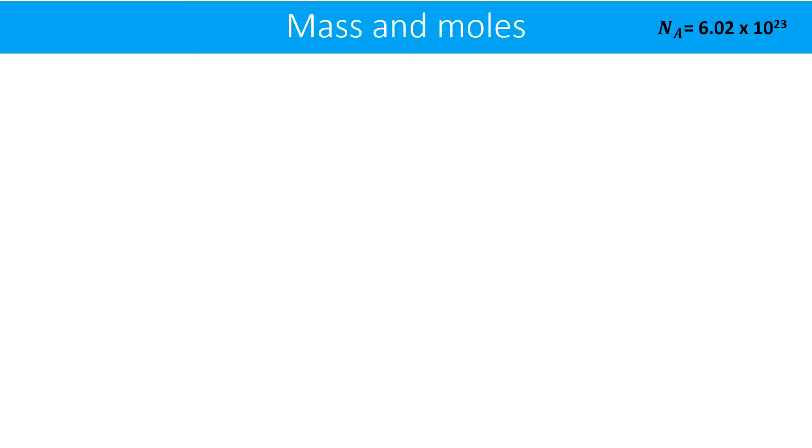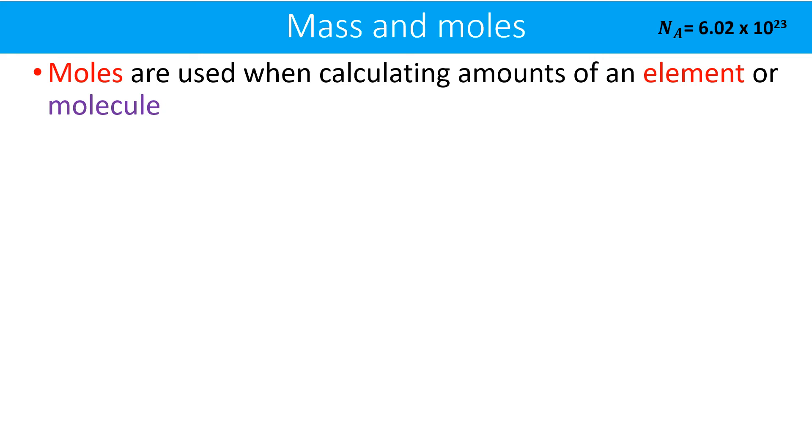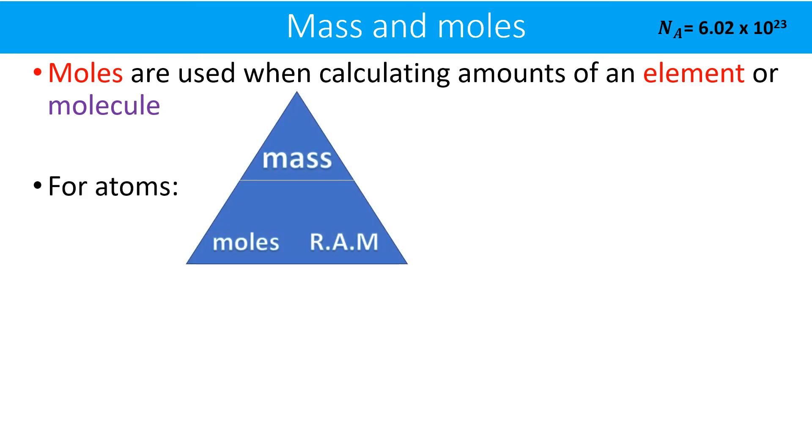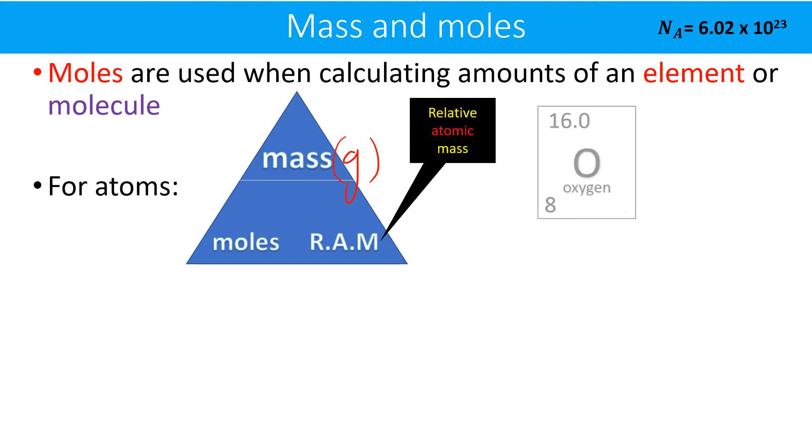Mass and moles—moles are used when calculating amounts of an element or molecule. So for atoms, this is the calculation: we have mass on the top in grams, and then we have moles and relative atomic mass, which don't have units. So in order to figure out what one mole of oxygen weighs, we simply look at the relative atomic mass. And if we want one mole of that, we multiply that number by one and that should give us 16 grams. That is one mole of oxygen atoms.